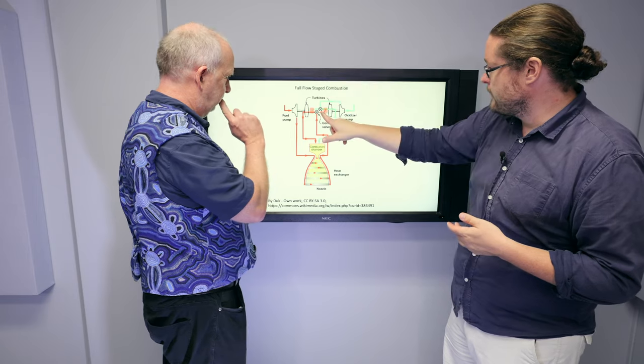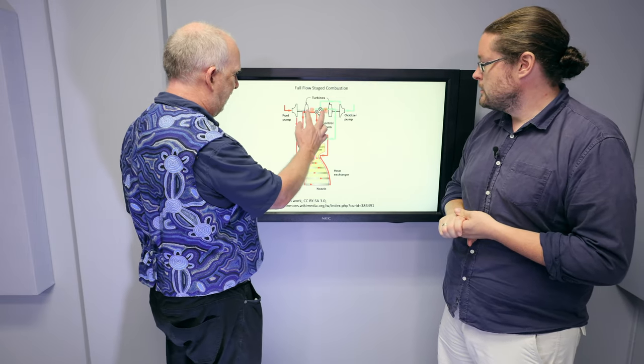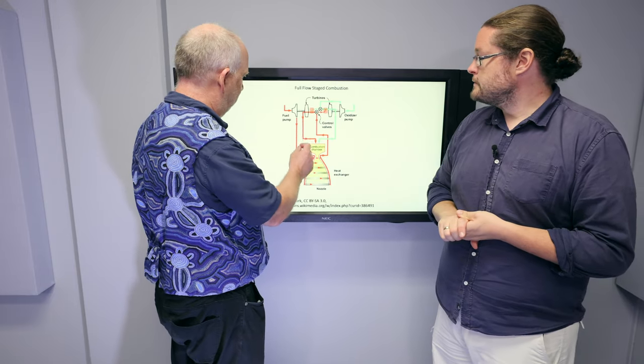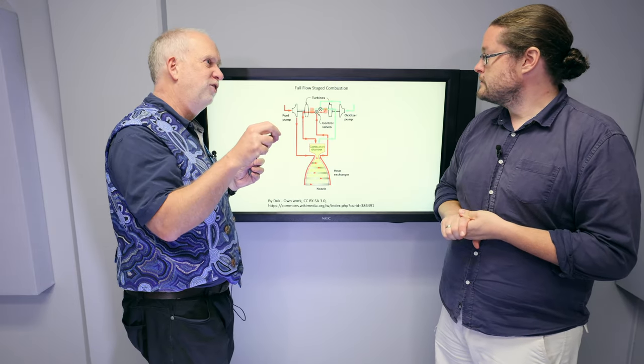That's right. And you have two turbines instead of the one in the center. And what happens is you've now got two mini rockets. And one of them burns, and it doesn't just burn, you don't just bleed off some of your fuel.